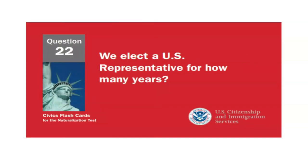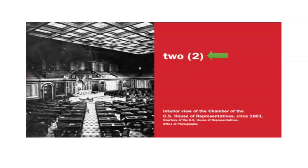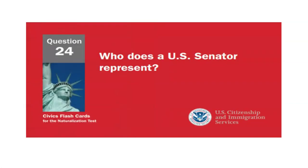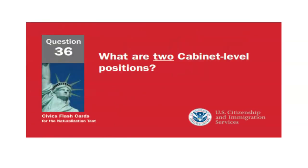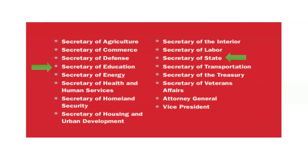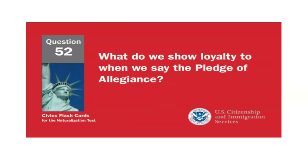We elect a U.S. representative for how many years? Two years. Who does a U.S. senator represent? All people of the state. What are two cabinet-level positions? Secretary of State and Secretary of Education.